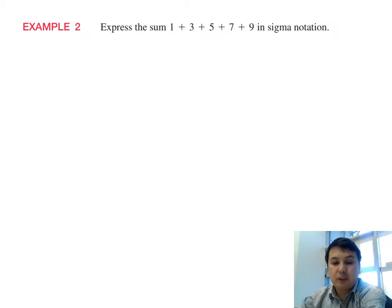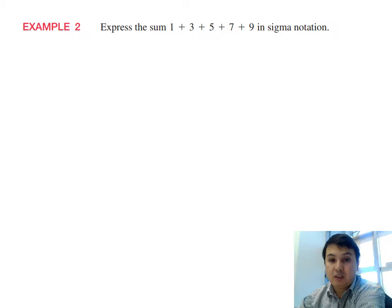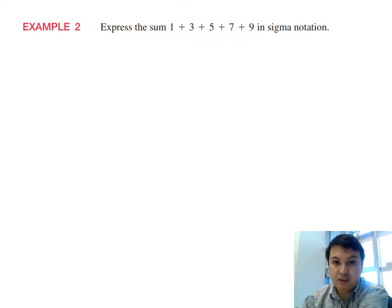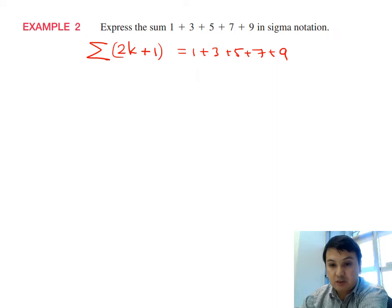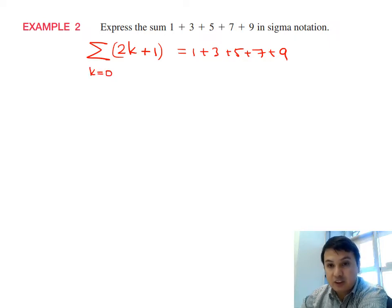Now let's express 1 + 3 + 5 + 7 + 9 in sigma notation. We need a formula that generates these odd numbers. Odd numbers can be represented as 2k + 1. For the sum to start at 1, k must start at 0, since when k = 0 we get 1. Since there are 5 terms and the last is 9, we end at k = 4.